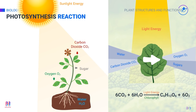The carbon dioxide needed in photosynthesis enters the plant through the stomata in the leaves. The water required in photosynthesis is taken in by the roots and transported to the leaves via the xylem tissue.